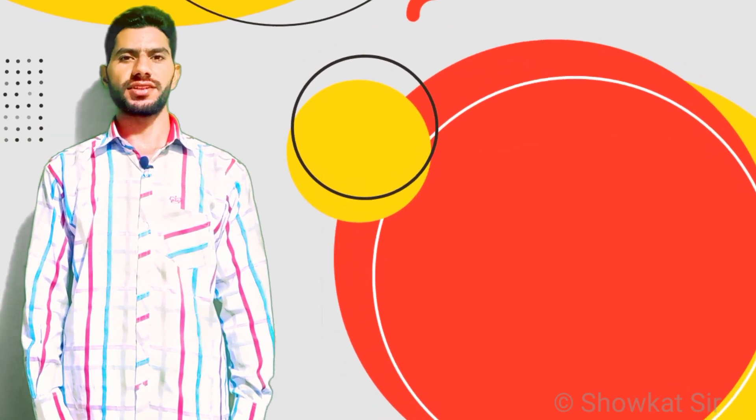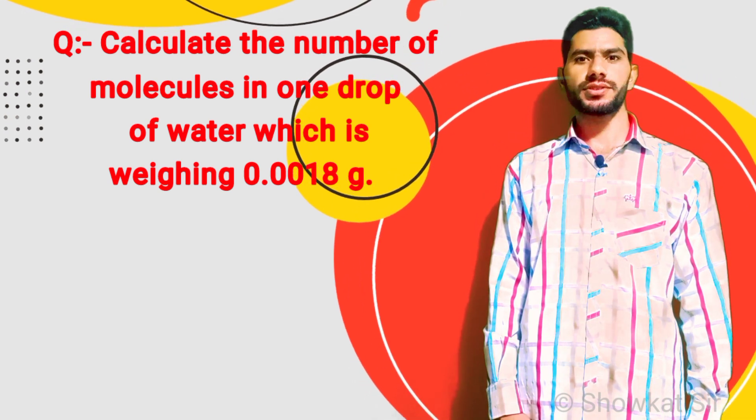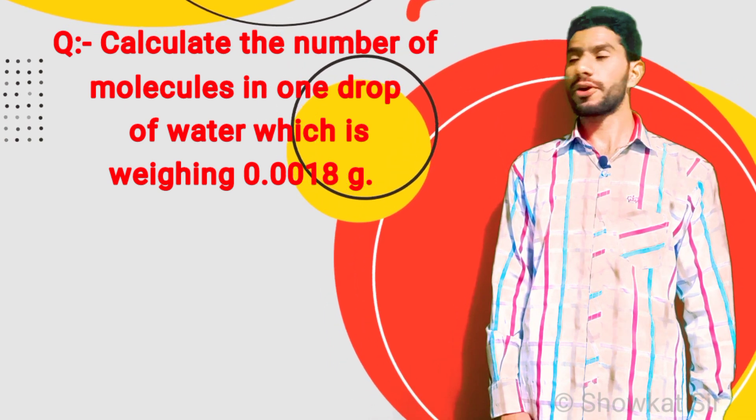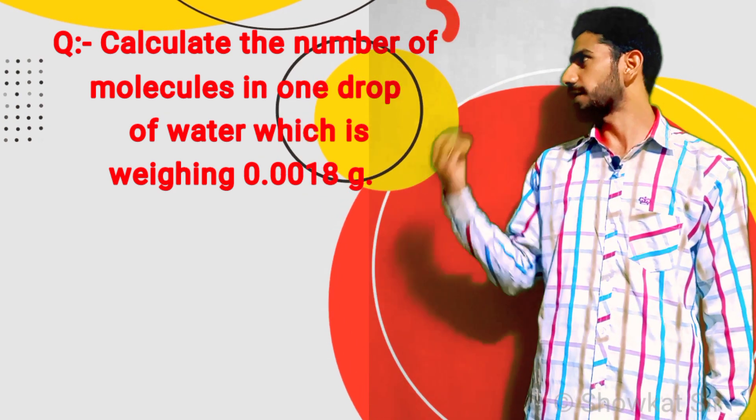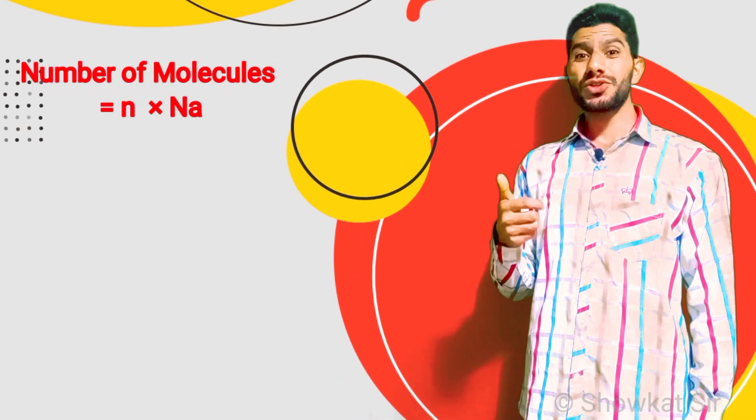Welcome dear students. In this series, today our question is: Calculate the number of molecules in one drop of water which is weighing 0.0018 grams. So as we already know, the number of molecules is equal to the number of moles into Avogadro's number.